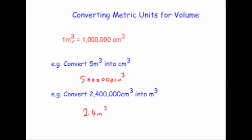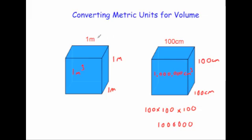The main thing to remember is that one meter cubed equals one million centimeters cubed. The most common mistake in the exam is people think one meter cubed is 100 centimeters cubed — but that's not true, because each of the three lengths is multiplied by 100, so together that makes it one million times bigger. So one meter cubed is one million centimeters cubed.